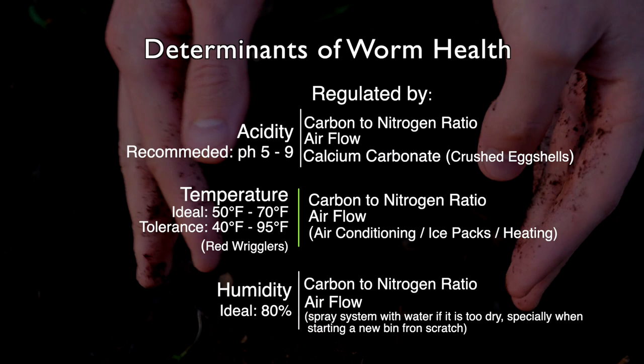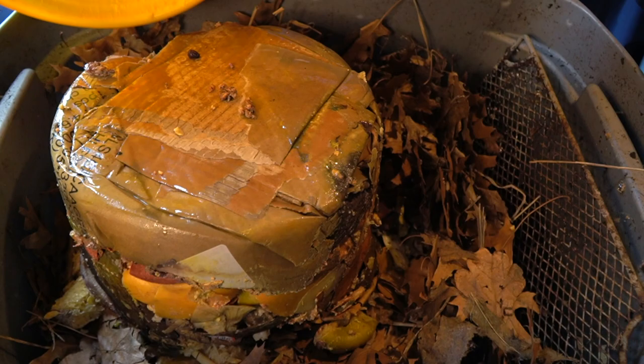Let's talk about temperature. The ideal temperature inside of your vermicomposting system is right between 50 and 70 degrees. Worms have a very similar temperature tolerance to human beings. Once the temperature starts to go above 90 they become very uncomfortable, and once it surpasses 95 degrees, the temperature is way too high for the well-being of your worms. Nitrogen — the food scraps that you add to your system, including coffee grounds — when they begin to decompose, they generate a lot of heat.